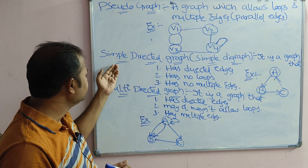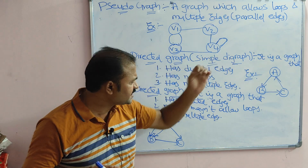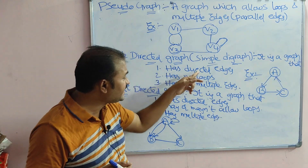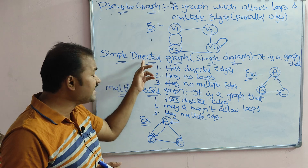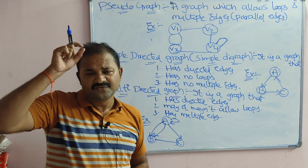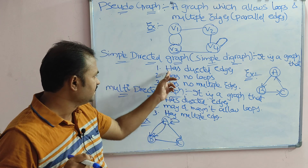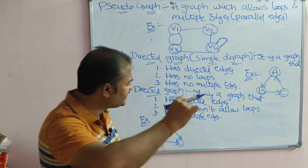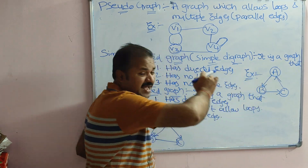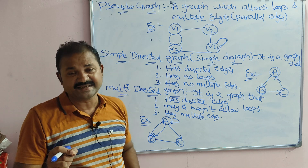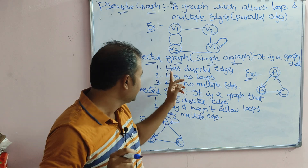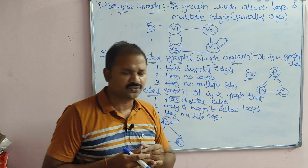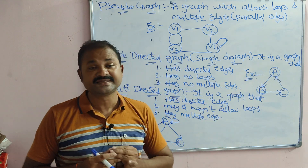Next is the simple directed graph, also called a simple digraph. It is a graph that has directed edges — directed graph means we must have directed edges, where an edge has a direction, which is an arrow. For example, from A to B we have a directed edge, B to C is a directed edge, and C to A is also a directed edge.